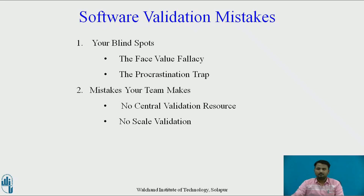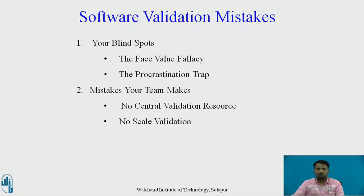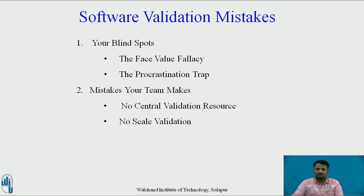The next mistake is the procrastination trap — that means to keep delaying something that must be done. If you overlook software validation until the end of the project, the whole process becomes much more difficult. With this blind spot, you miss the value of software validation. The next mistake is mistakes your team makes: you have wasted a 30-minute team meeting because the team did not have a common software validation approach.